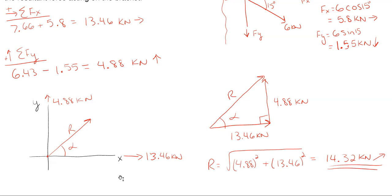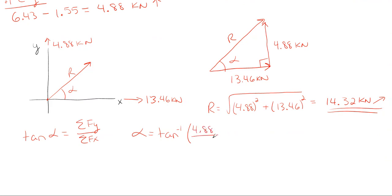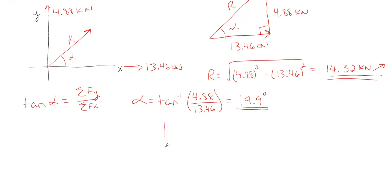Now we just need to find our angle alpha. Since we are inside a right triangle, we can use tangent. The tangent of alpha is going to be the summation of y over the summation of x. Rearranging and solving for alpha, we take the tangent inverse of y over x: tangent inverse of 4.88 kilonewtons over 13.46 kilonewtons. My alpha angle pops out to be 19.9 degrees. So there is my resultant force and the direction it's at. It is best to redraw a little coordinate system and show the resultant with its magnitude.